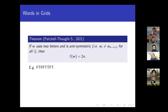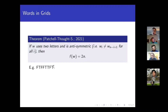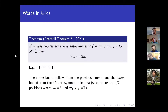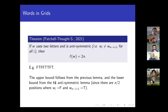If you consider a word W which uses two letters and which is anti-symmetric, then the F(W) function is exactly 2N. For example, an anti-symmetric word would have the first letter differing from the last letter, the second letter differing from the second-to-last letter, and so on — like mirrored versions. The proof uses work we've already done: the upper bound is the 2N result from the previous slide, and the lower bound is the 4K anti-symmetric construction. Because we're only using two letters, there are N over 2 positions where the anti-symmetric condition holds, so plugging N over 2 into K gives exactly 2N. This is another fairly wide class of words where we immediately know the exact count.